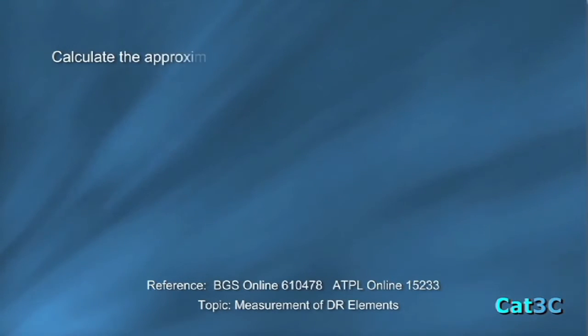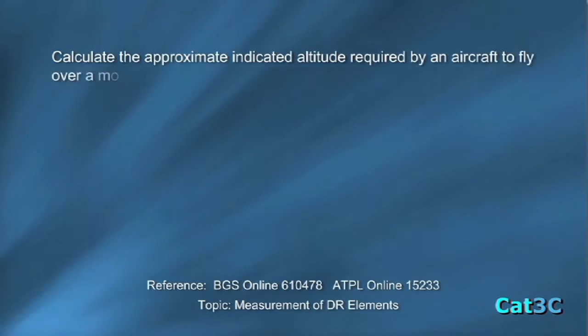Calculate the approximate indicated altitude required by an aircraft to fly over a mountain range with a minimum clearance of 2,000 feet.